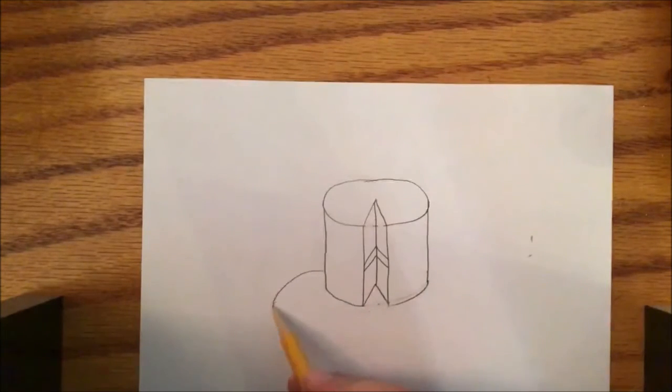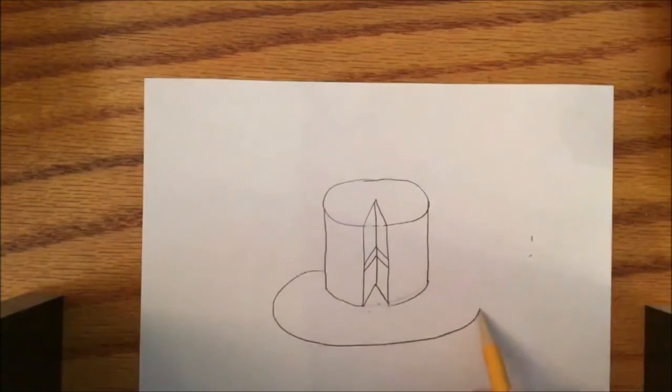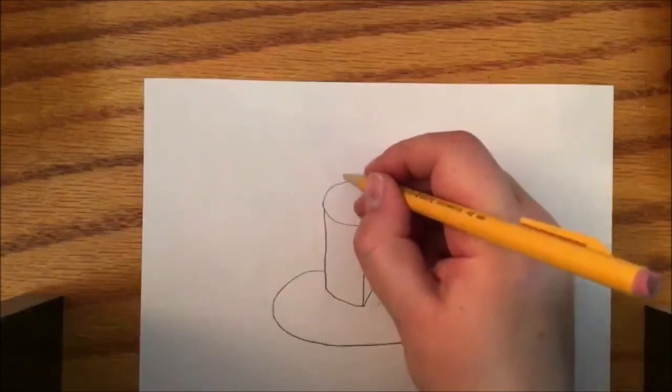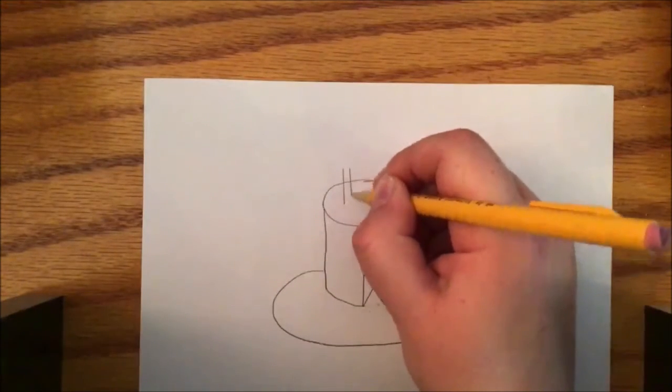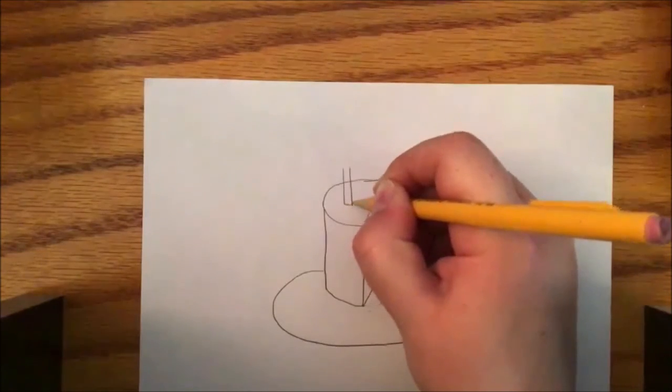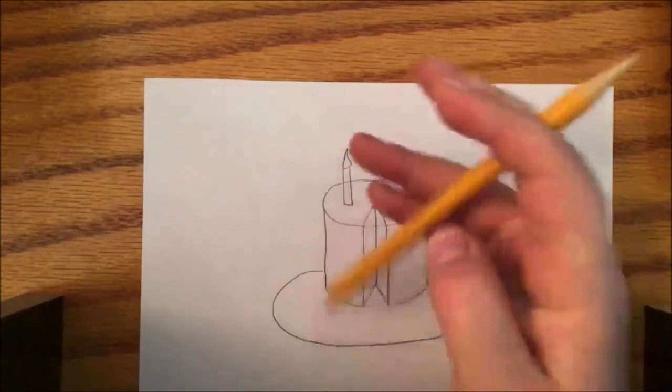So, if I want a plate, I might just do a big oval, hide it behind. If I want some candles, you can do some lines down, curve, maybe it's on fire already.